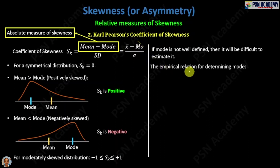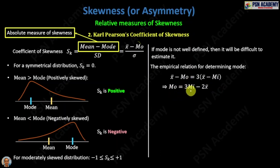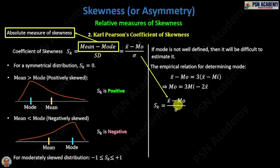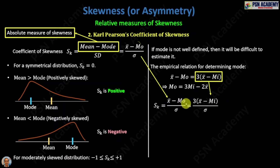We can use the empirical relation: mean minus mode equals three times (mean minus median), which gives mode = 3·median − 2·mean. Substituting into the formula, S_k = (x̄ - Mo) / σ, we replace (x̄ - Mo) with 3(x̄ - median) in the numerator, keeping σ in the denominator. Now the measure depends upon median rather than mode, and median is very easy to find. In this way you can modify the formula from one dependent on mode to one dependent on median.